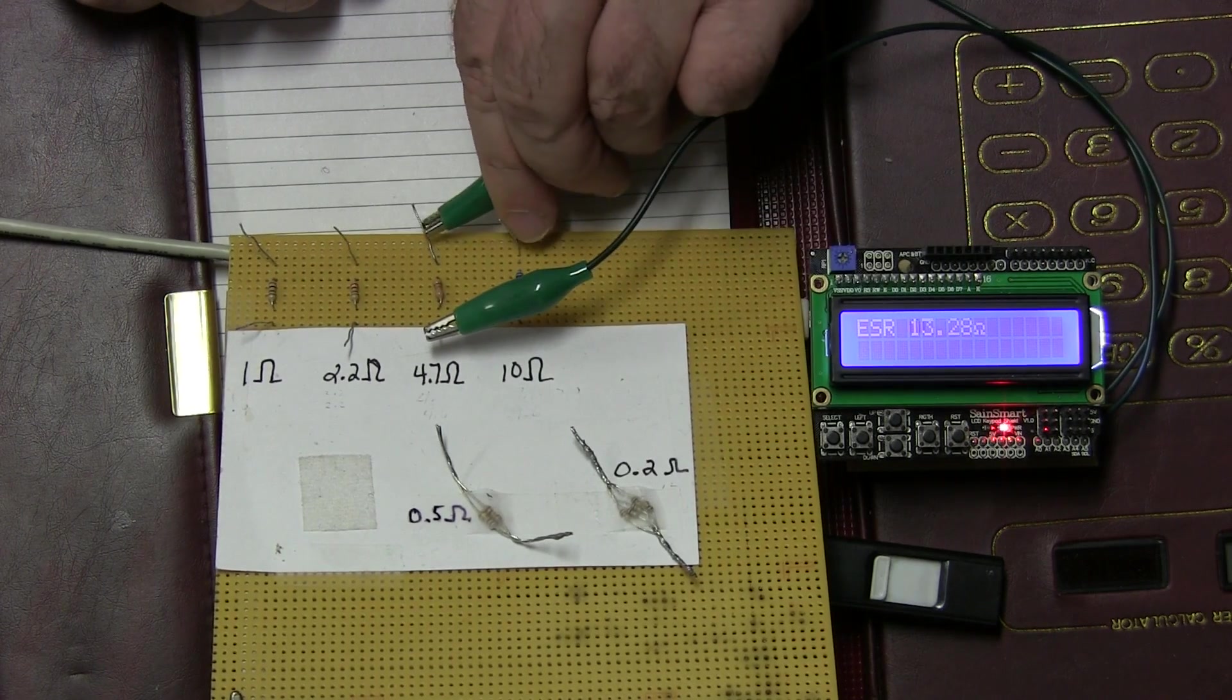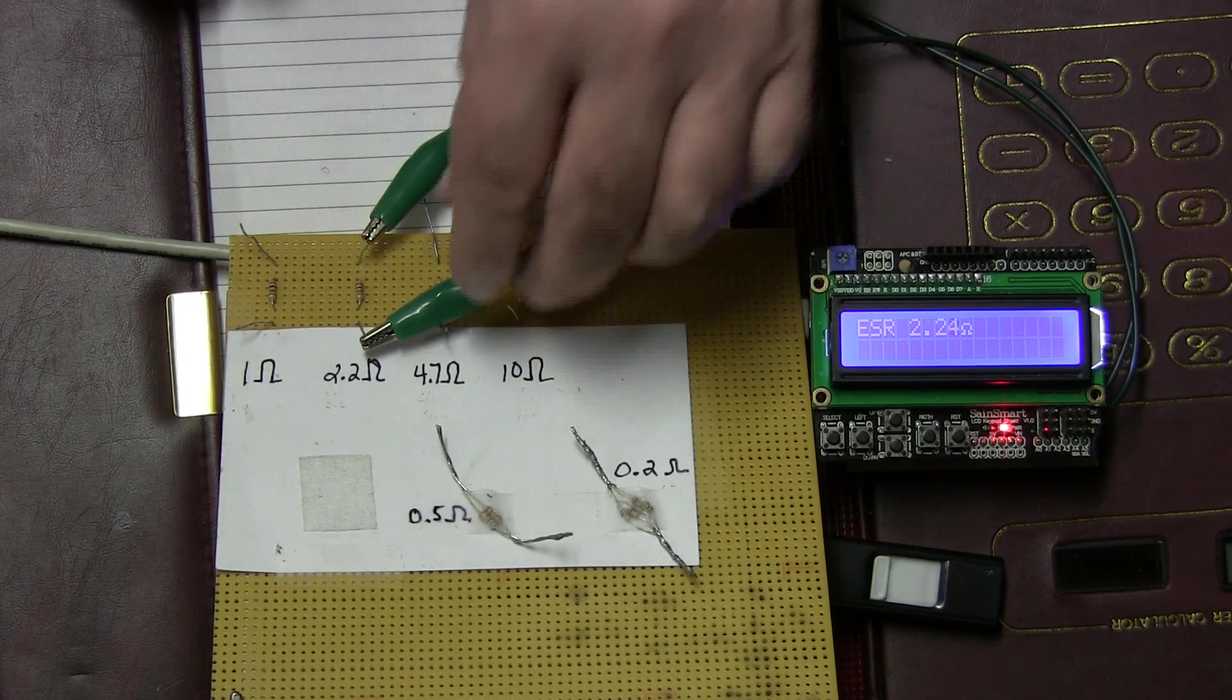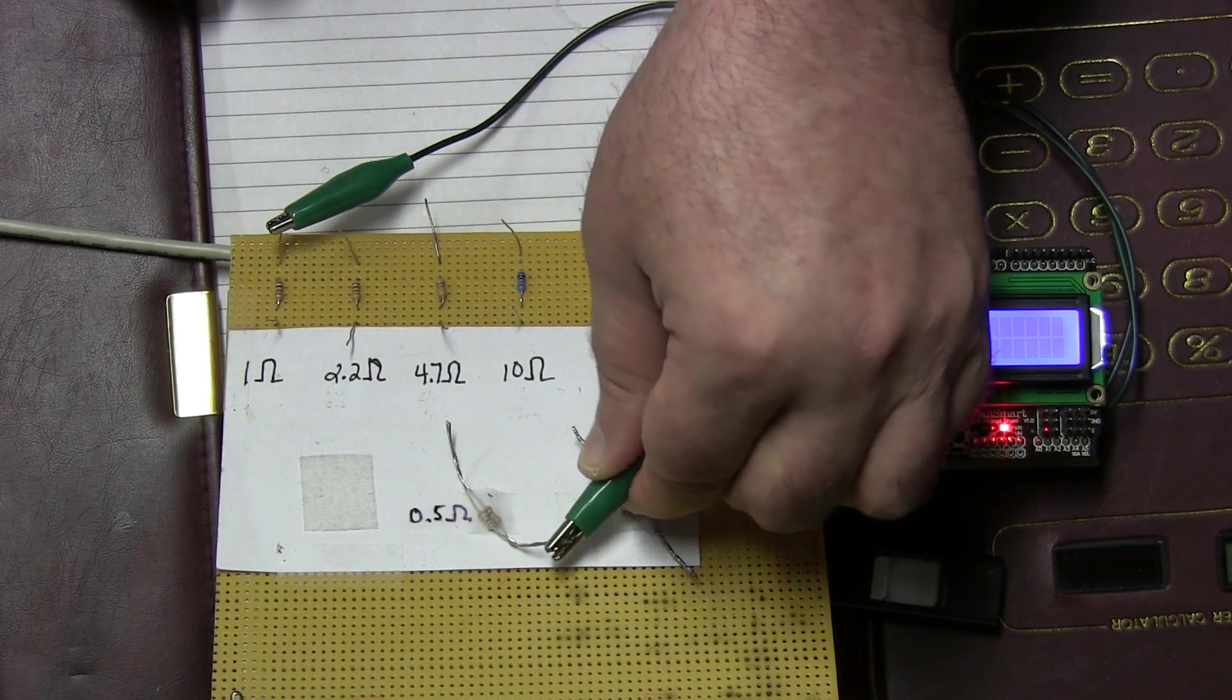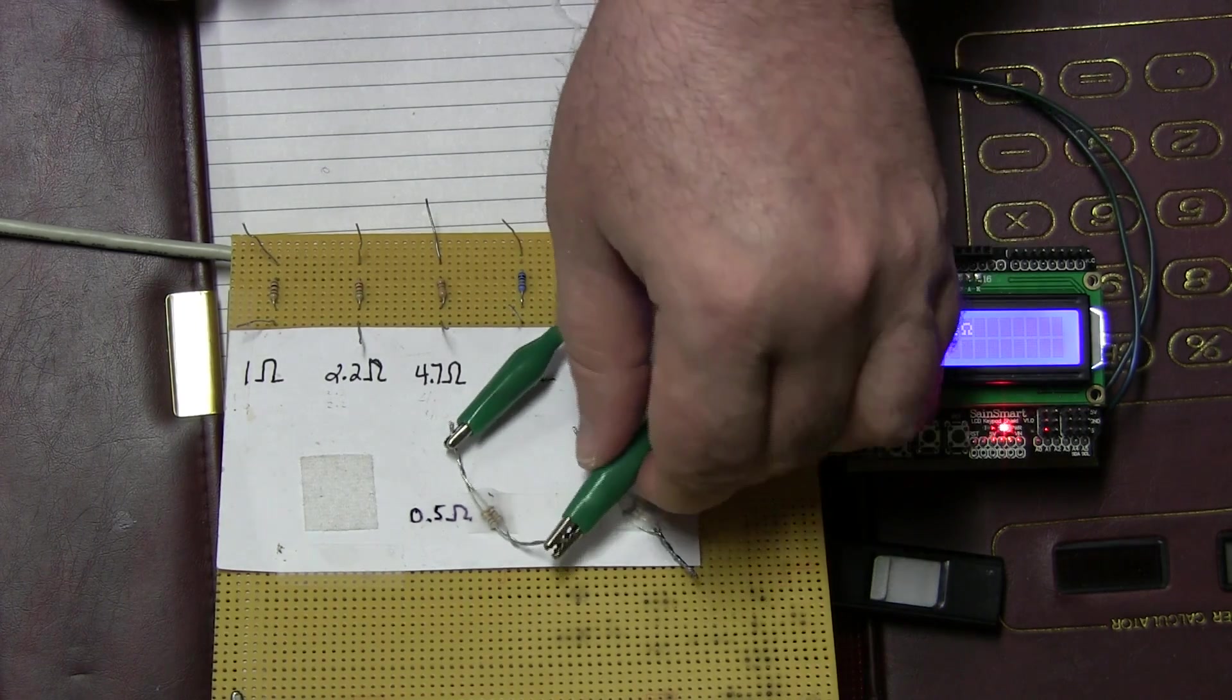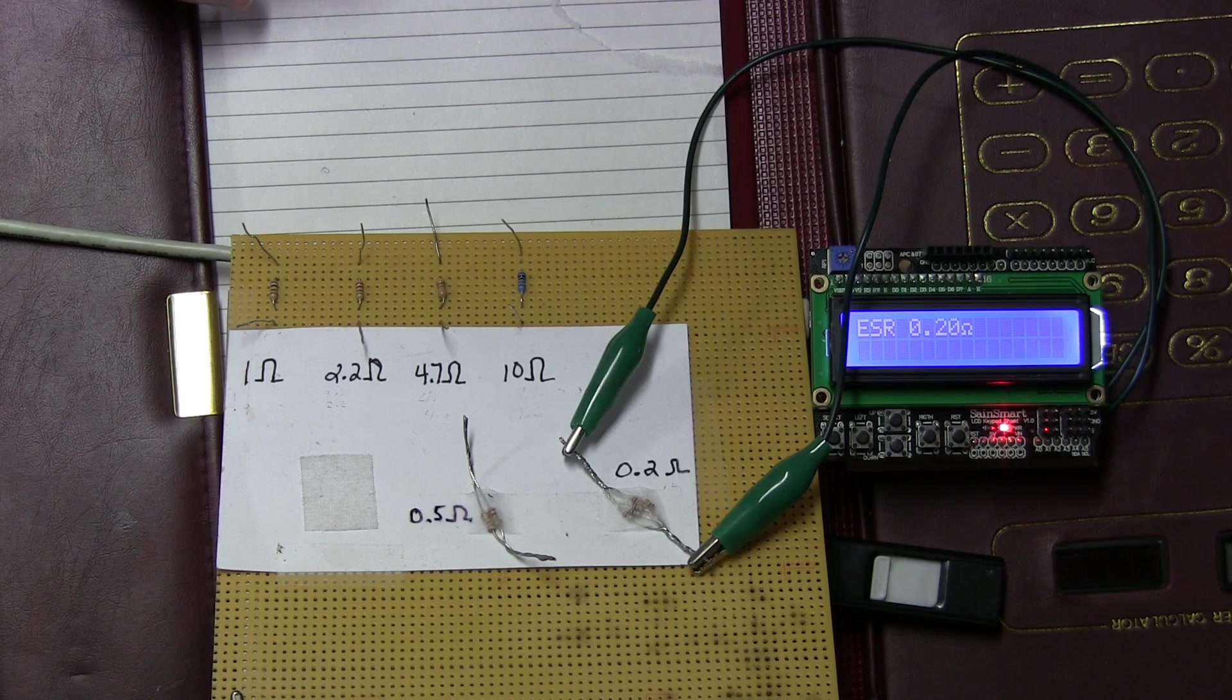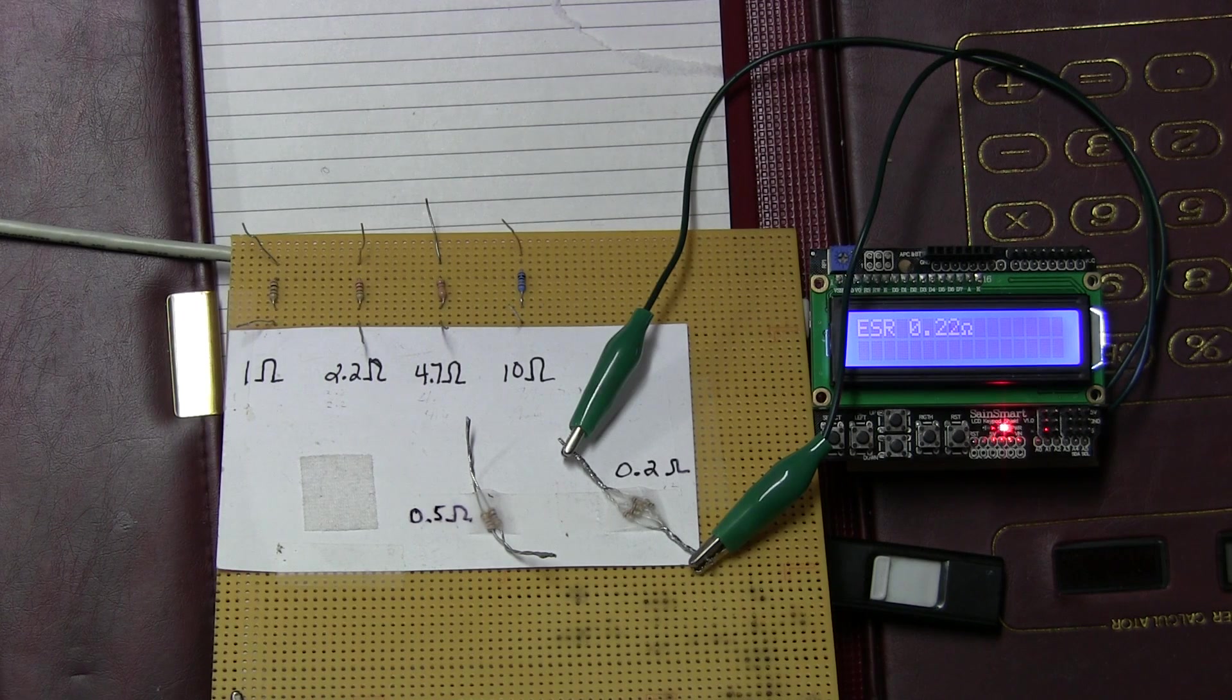The 4.7 ohm resistor, it measures 4.68. The 2.2 ohm, it measures 2.22. 1 ohm resistor, it measures 1.02. What I have here, I have two 1 ohm resistors in parallel for a value of 0.5, and the meter reads 0.53. And then I have five 1 ohm resistors in parallel. That should have a value of 0.2. And that's reading spot on at 0.2 ohms.